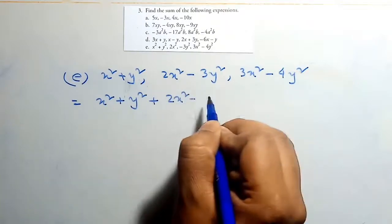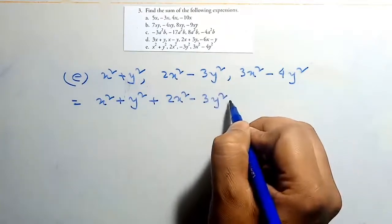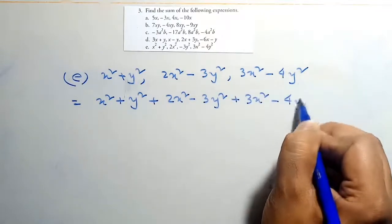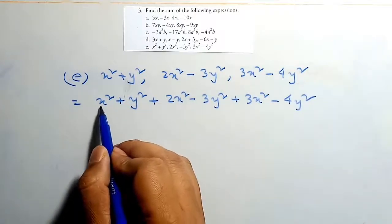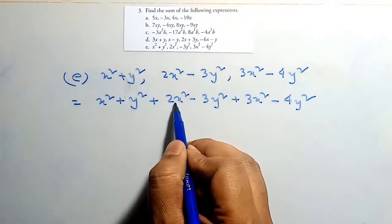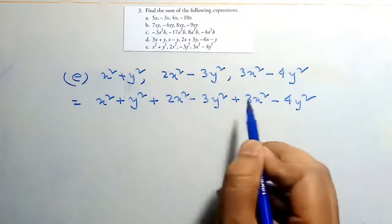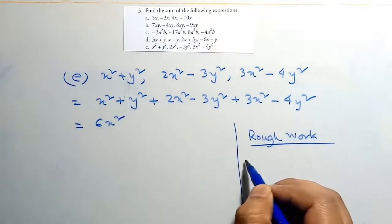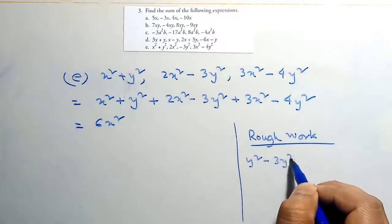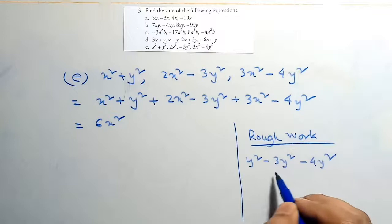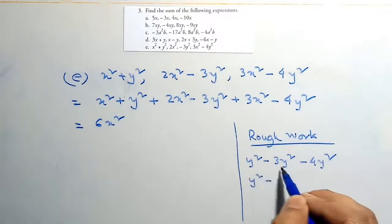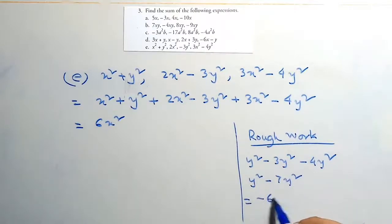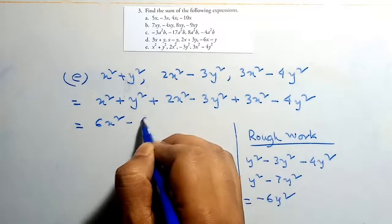According to the next position: x² plus y² plus 2x² minus 3y² plus 3x² minus 4y². For x² terms: x² plus 2x² plus 3x² equals 6x². For y² terms: y² minus 3y² minus 4y² equals minus 6y². So the answer is 6x² minus 6y².